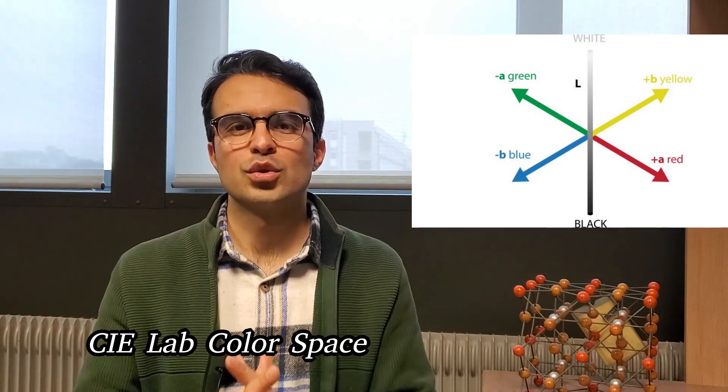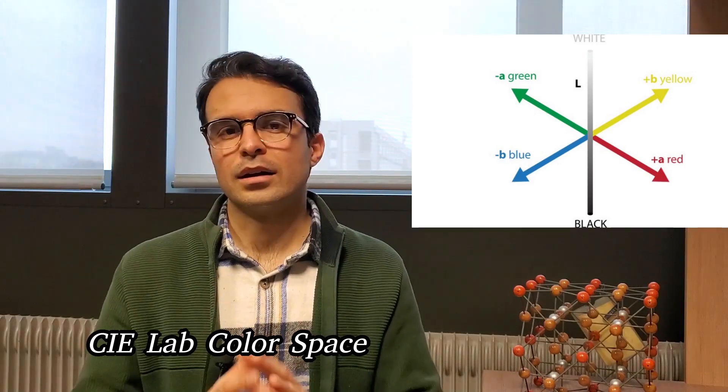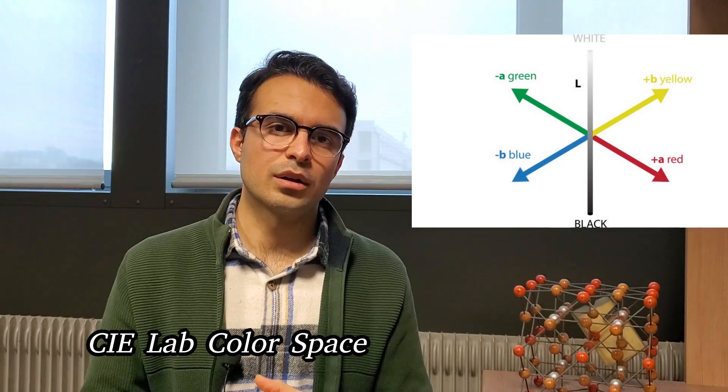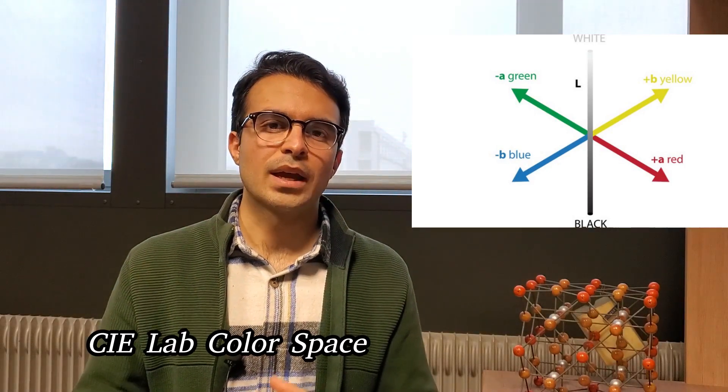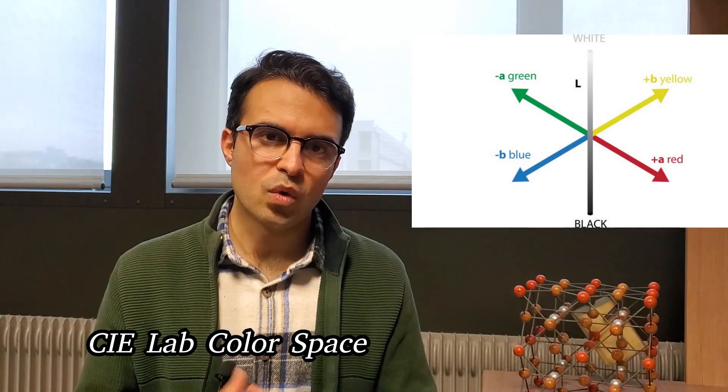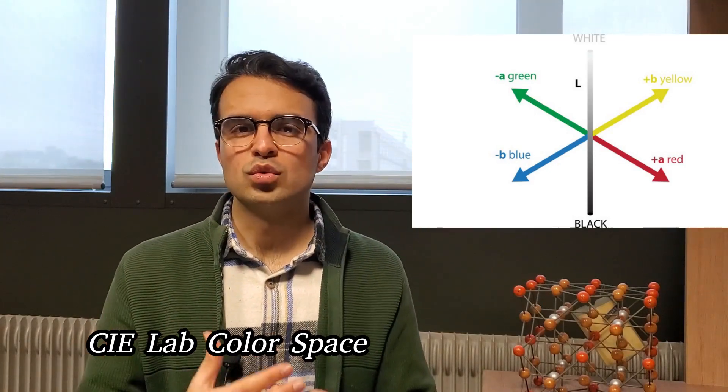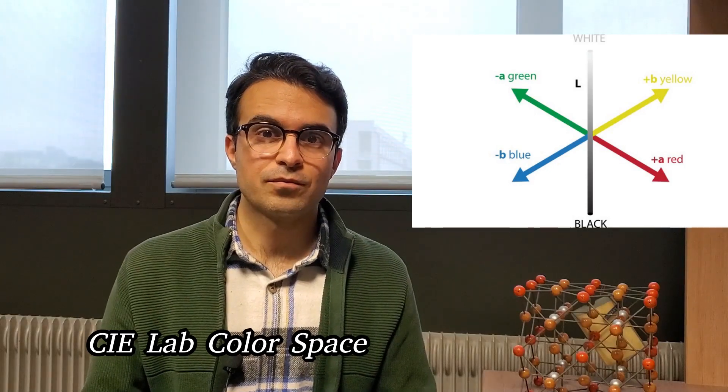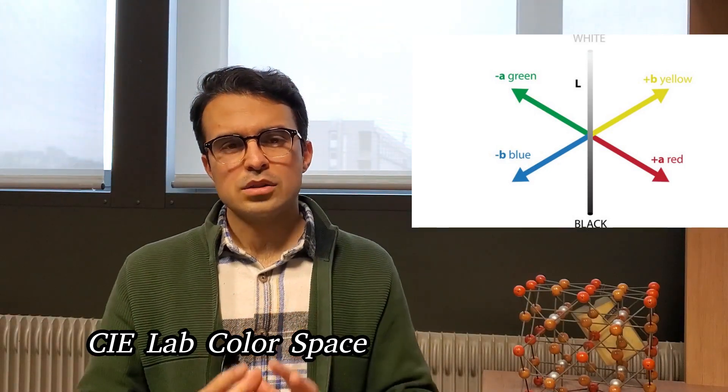However, CIE LAB has a different 3D representation. So you can imagine an axis of L that is luminosity and two other axes that cross each other, one of them yellow-blue and one of them red-green axis.